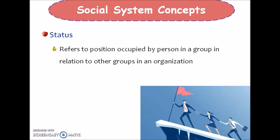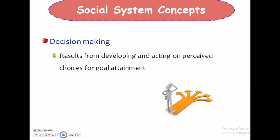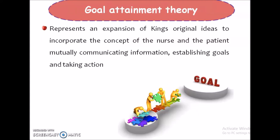Next is status. Status refers to the position occupied by a person in a group in relation to other groups in an organization. Next is decision making. Decision making results from developing and acting on a perceived choice of goal attainment. These are the concepts of each system.